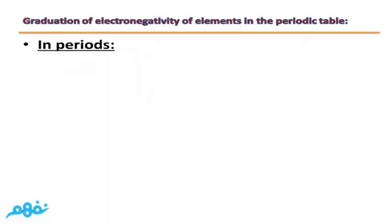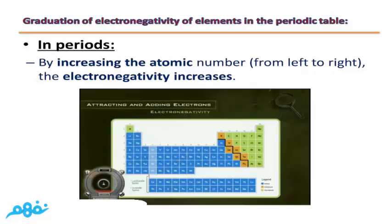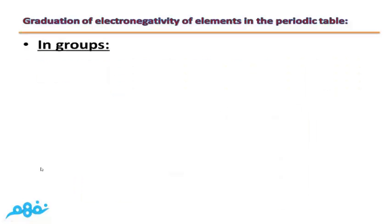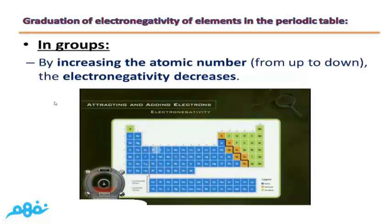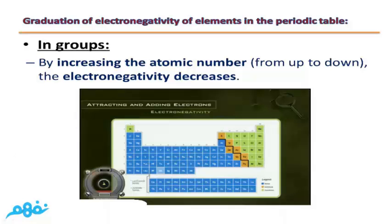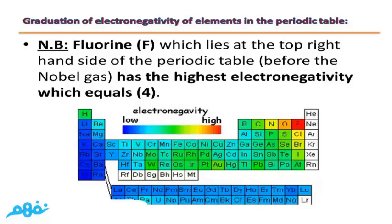Let's talk about the graduation of electronegativity of elements in the periodic table. In periods, by increasing the atomic number from left to right, the electronegativity increases, as you can see from this scale. From up to down in groups, electronegativity decreases by increasing the atomic number. We can conclude that fluorine is the element with the highest electronegativity, because it lies at the top right-hand side of the periodic table just before noble gases. Fluorine has the highest electronegativity, which is equal to 4.